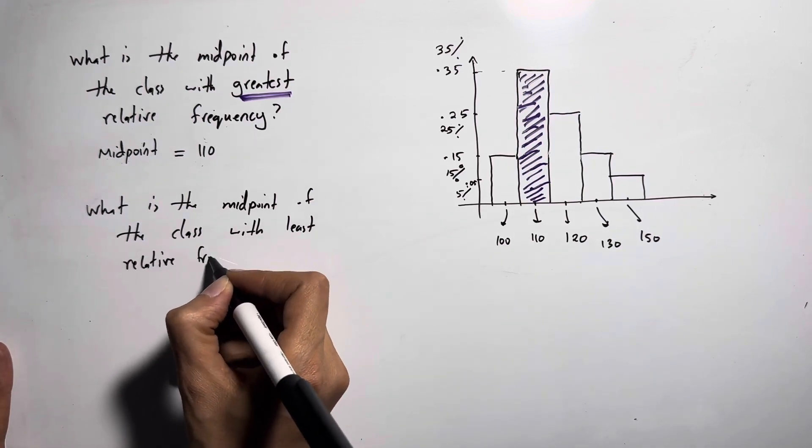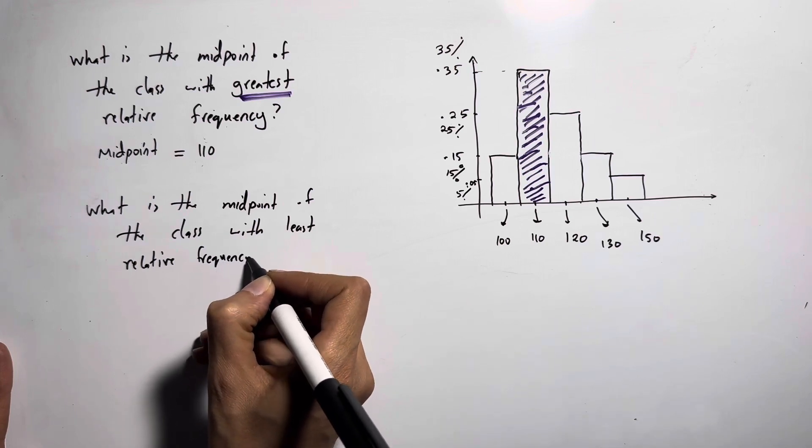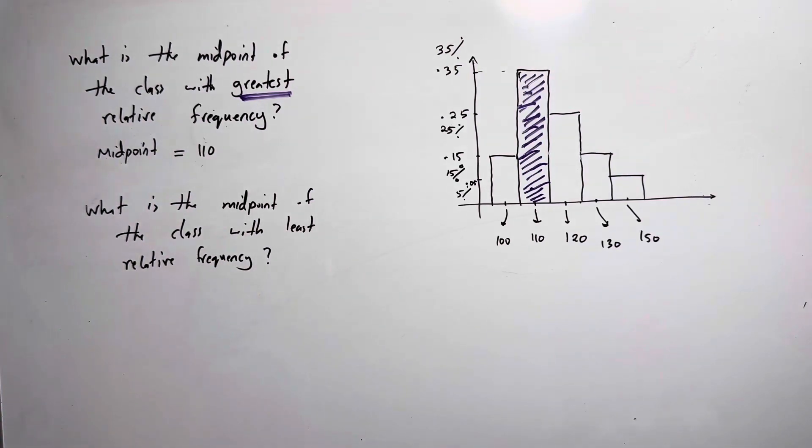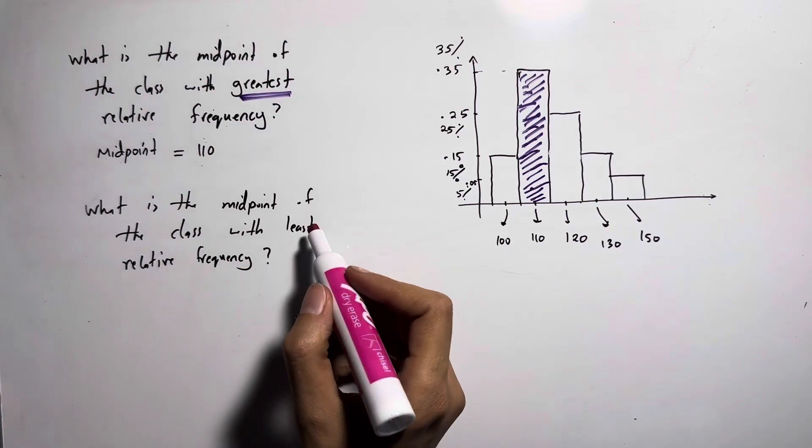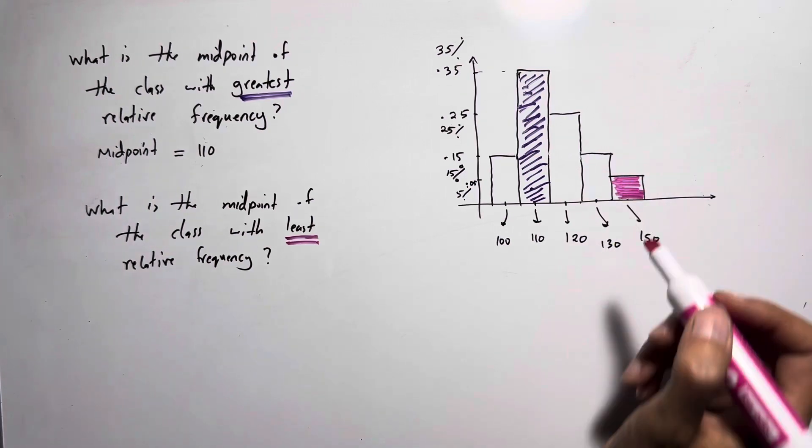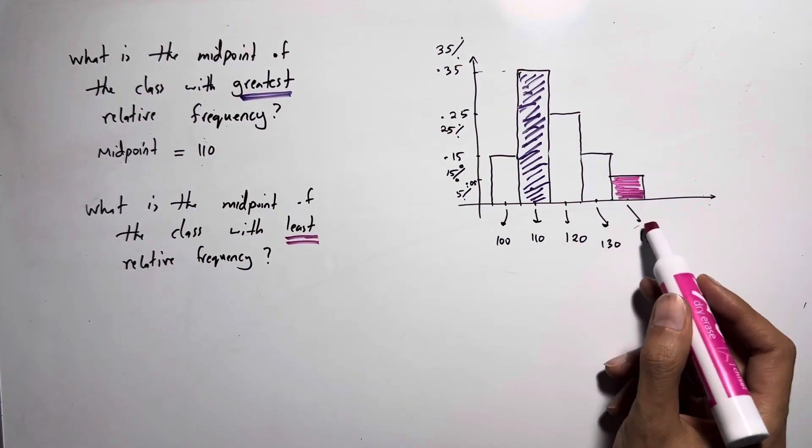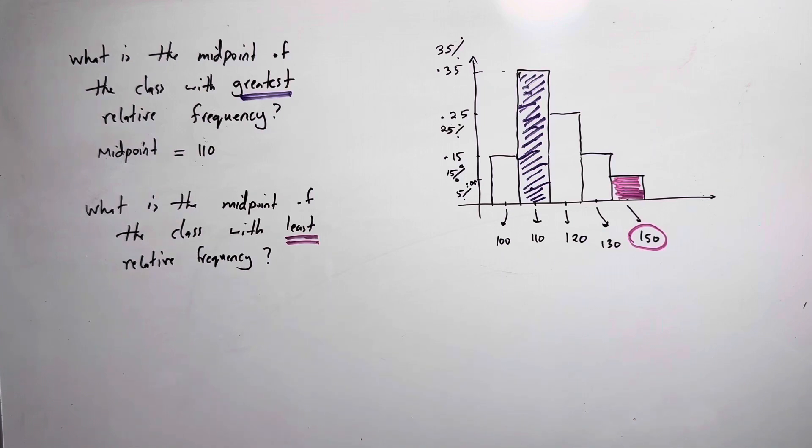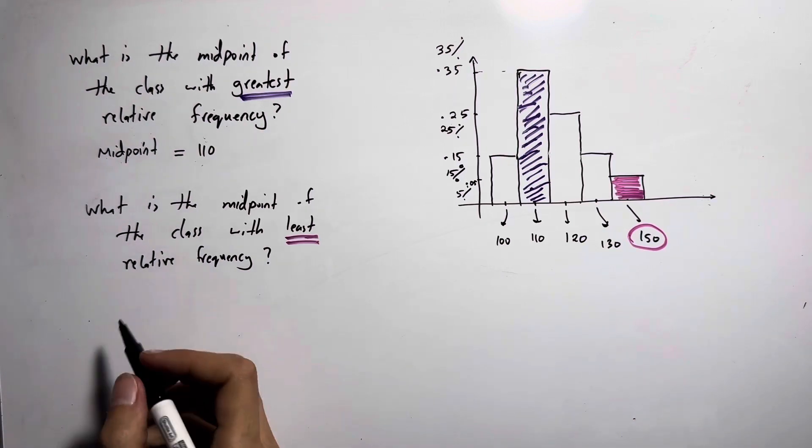We're looking for the smallest bar, least represented, the smallest bar. So as you can see, the midpoint is 150, so its midpoint is 150.